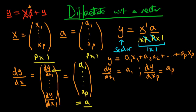We could have anticipated this: if we thought of x and a as scalars, differentiating x^T * a with respect to x would just leave a. But we have to be careful when differentiating with respect to a vector, because we need to ensure the result has the correct dimensions. In this case it made sense to write the result as the vector a.